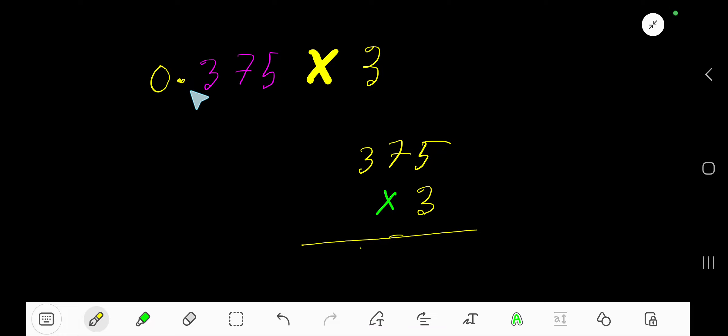How to multiply the decimal number 0.375 times 3. Ignore the decimal and write the number you are getting: 375. Now multiply by the whole number 3. 3 times 5 is 15. Bring down 5, carry 1.